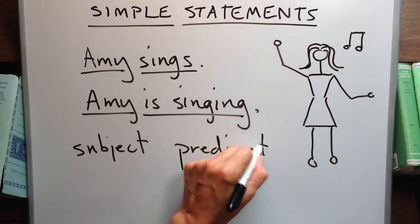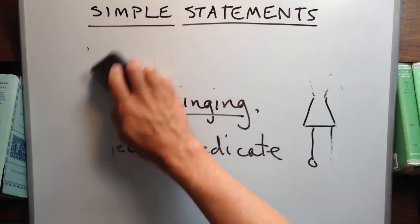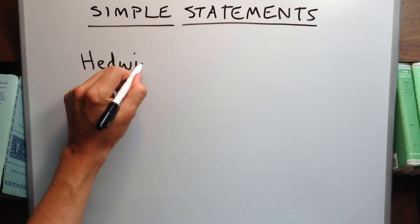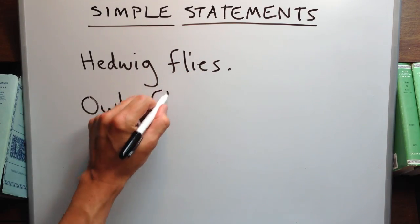In another example, Hedwig flies. Hedwig is the subject. Flies is the predicate. Owls fly. Owls is the subject.